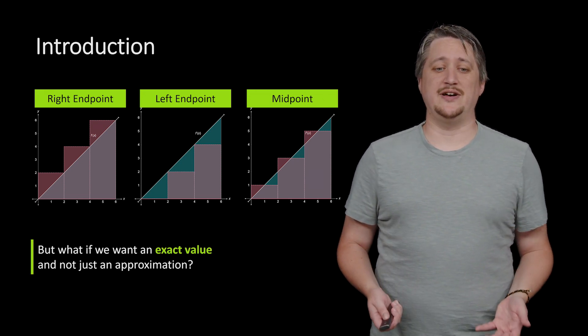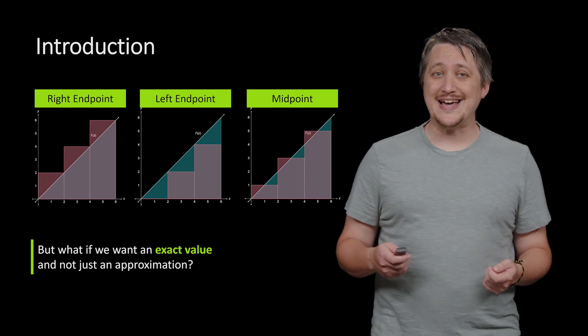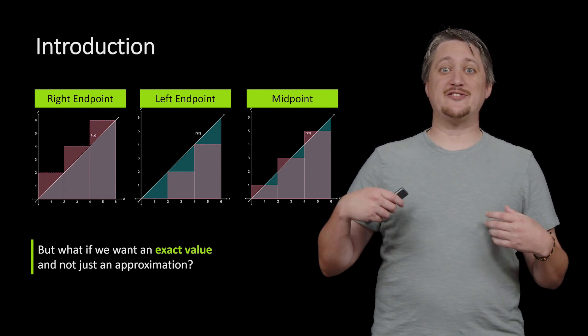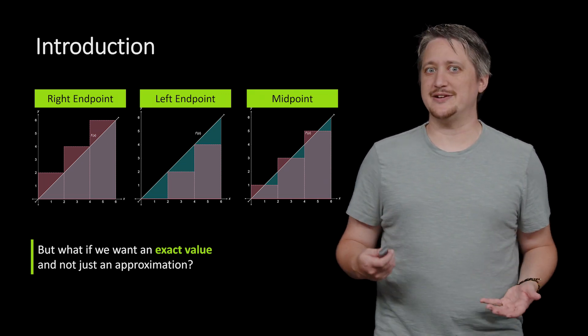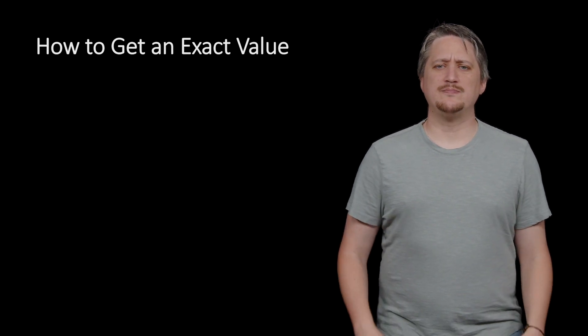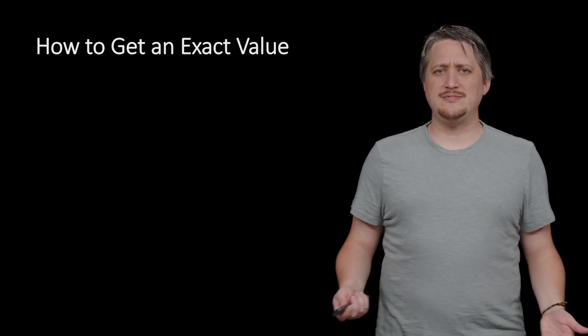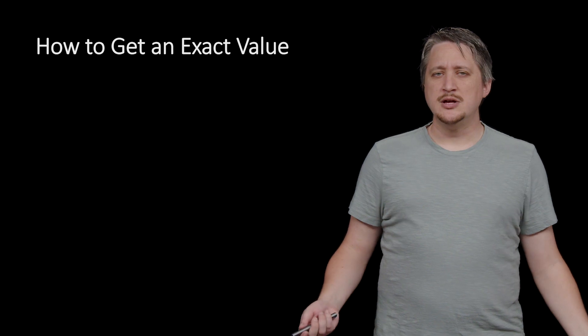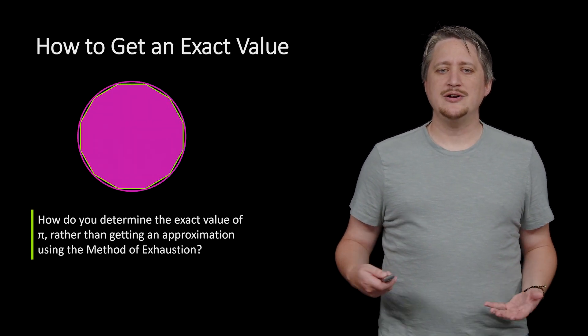So what if we want an exact value, not just an approximation? We want exactly the best possible approximation—an exact number. How do we get that?